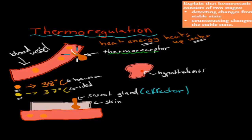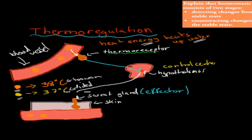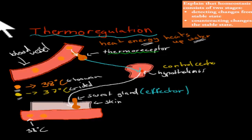Once the thermoreceptors read that it's 38 degrees Celsius, they send a message to the hypothalamus. The hypothalamus is our control center — it decides what to do. Because the temperature is too high, it will send a signal to the sweat gland, which can be found in our skin. The white line here is our signal going from the hypothalamus to the sweat gland. And here we still have 38 degrees Celsius. As soon as the hypothalamus responds, the sweat glands act as the effector — the effector always makes the response happen.